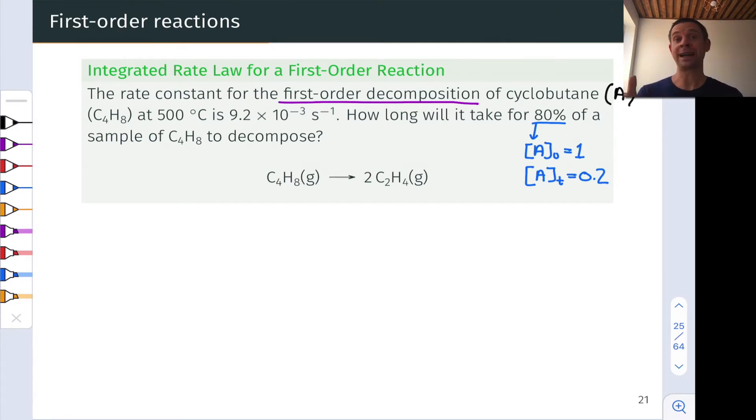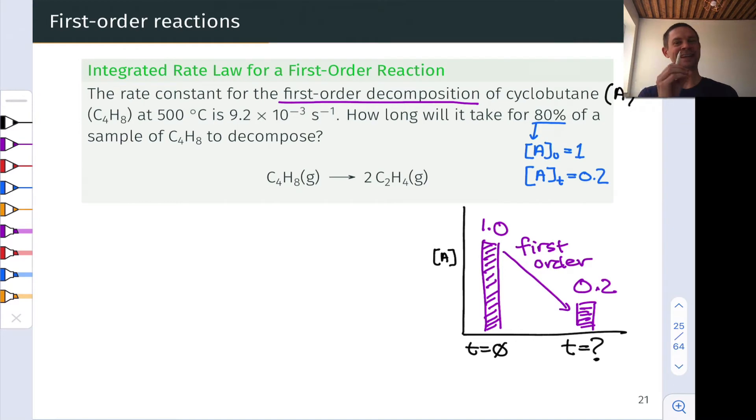Before we dive into the math and even write out the first order integrated rate law, let's think about this situation graphically. So we start at T equals 0 with 1 mole per meter of A, let's say. And we're interested in the point along the x-axis, if you like, the time point where the concentration of A is at 0.2. And we know that this decay follows first order kinetics. Mathematically, this is exponential decay, if you look at the form of the integrated rate law.